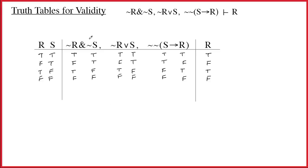The next step is to number all the connectives so you know exactly what order you're working in. We always do main connectives last. For the first formula, number one and two go to the tildes, and the ampersand itself is three. Starting with the tilde: true-false-true-false becomes false-true-false-true. Once we've used a column, we cross it off.